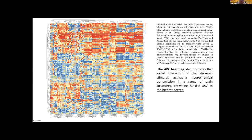On the y-axis you have each particular animal — each line is a particular animal. You can see we have B, C, and A, where A is amphetamine administration, B is a constant context response following chronic morphine administration, and C is repetitive social interaction. On the x-axis you get the substances and the brain structures, bound up within some clusters. This heat map demonstrates that social interaction is the strongest stimulus activating neurochemical transmission.